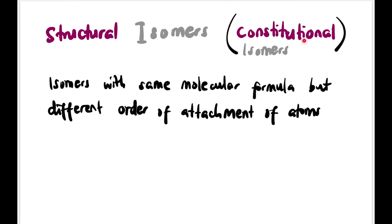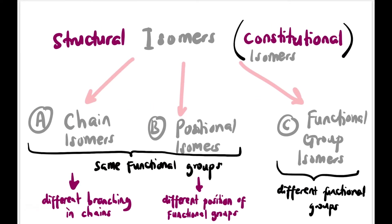Constitutional isomers are isomers with the same molecular formula but a different order of attachment of atoms. Constitutional isomers can be divided into three types: chain isomers and positional isomers share the same functional group — chain isomers differ in carbon chain branching, while positional isomers have the same functional group but at a different position. Functional group isomers have a totally different functional group.